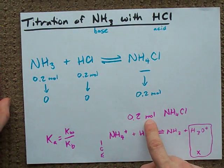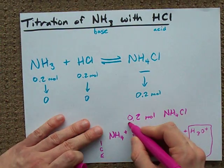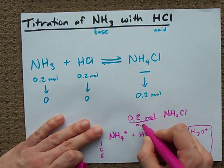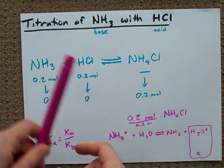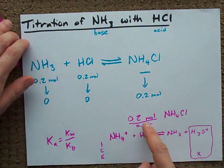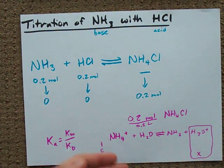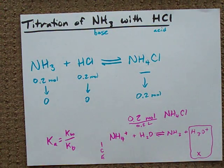Don't forget, you don't use moles in an ice table, you're going to have to divide that by whatever your volume is. I don't know, 100 milliliters, 200 milliliters, whatever. Just make sure you're using moles per liter in your ice table. It's kind of important. All right, best of luck, guys.